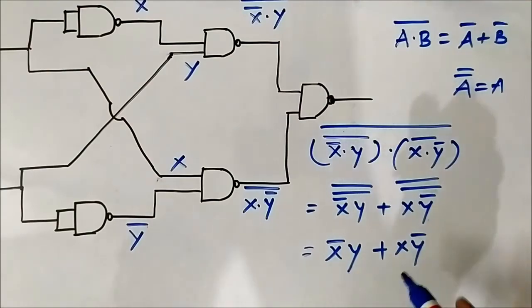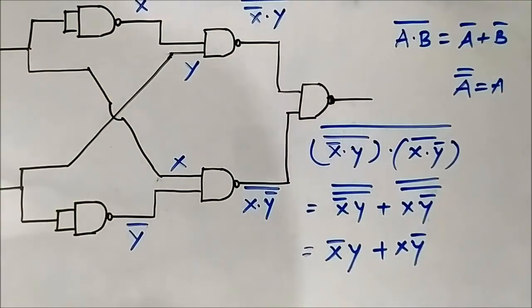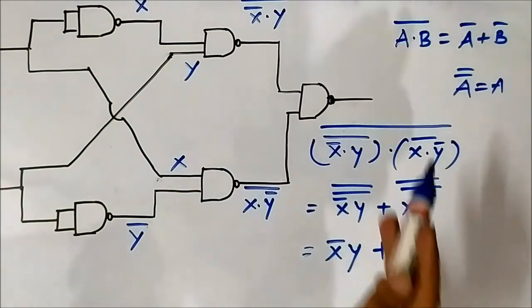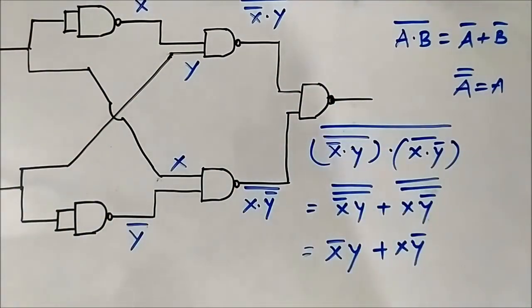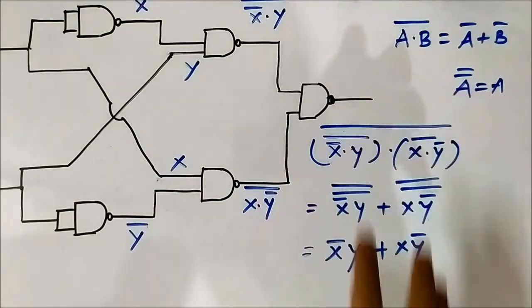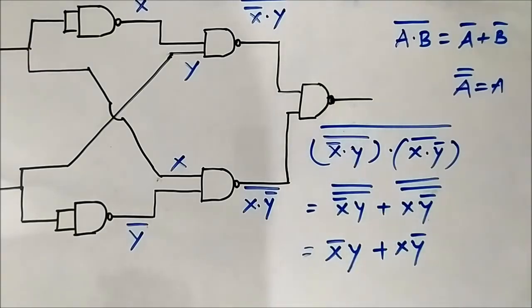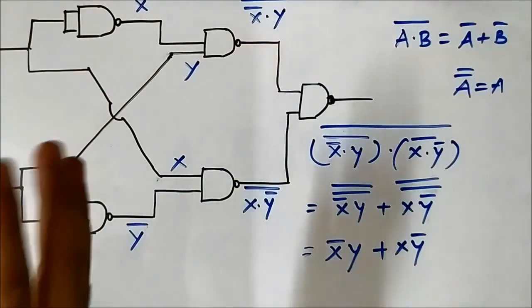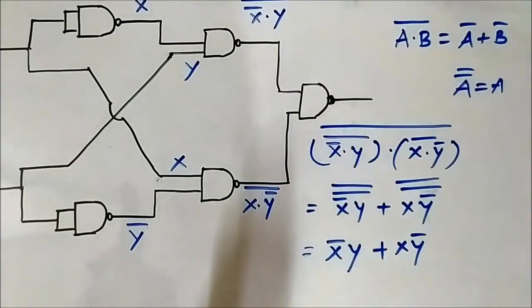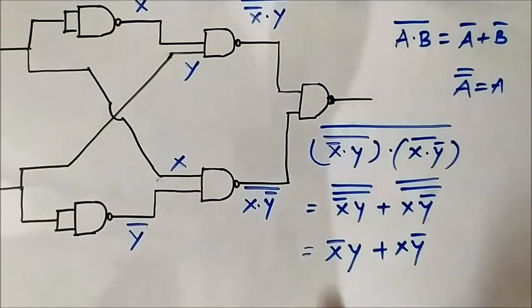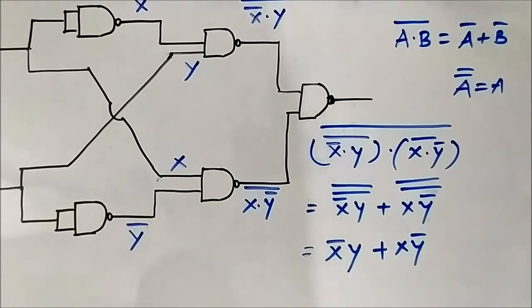This final output, X complement · Y OR X · Y complement, is nothing but the XOR gate output — so this circuit behaves as an XOR gate. We have now discussed 12 questions related to the boolean output of logic circuits. Always remember this approach: segment the logic circuit into layers, solve one level, then go to the next, and finally reach the output level. Please subscribe to my channel 'Engineering Tutorial' for more videos related to electrical, electronics, instrumentation, and communication engineering. Thank you very much!